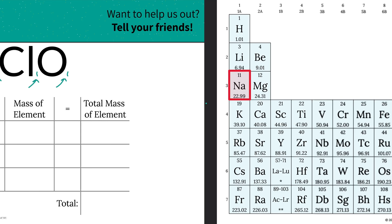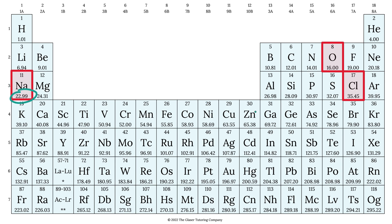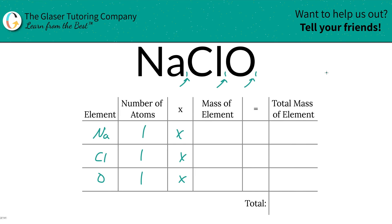Then we're going to multiply it by the mass of each particular element. That's where the periodic table comes into play. So sodium is 22.99, chlorine is 35.45, and oxygen is going to be 16.